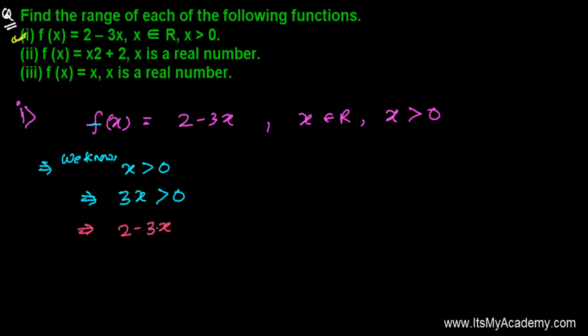So whenever you are going to subtract even a single bit from the 2, then definitely you'll get a number less than 2. Because you're going to subtract that. So whenever you're going to subtract even a very small thing from the 2, then it will be definitely less than 2.